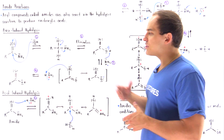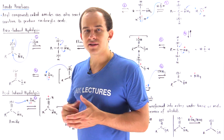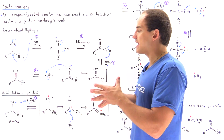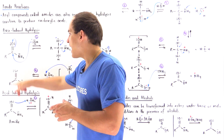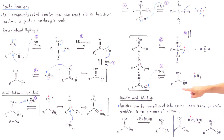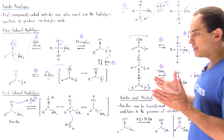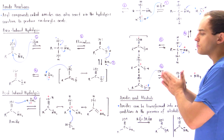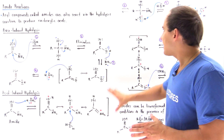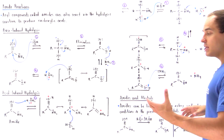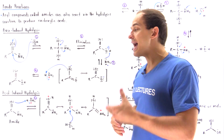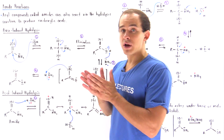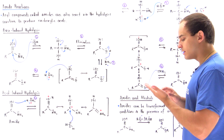Now let's look at the acid-induced hydrolysis of our amide. The net result is the same: we begin with the amide and end up with our carboxylic acid. The only difference is we're in the presence of an acid, so the reaction mechanism is different — essentially analogous to the acid-induced ester hydrolysis.